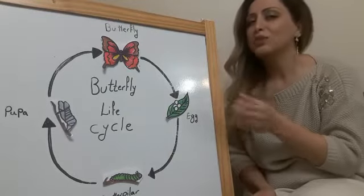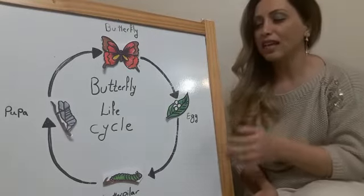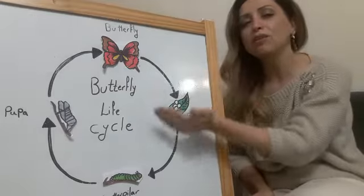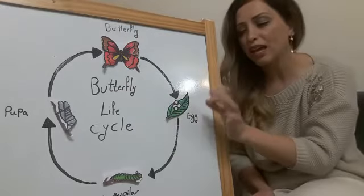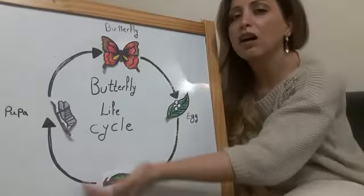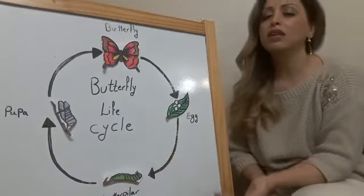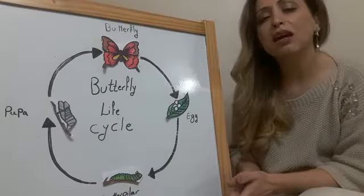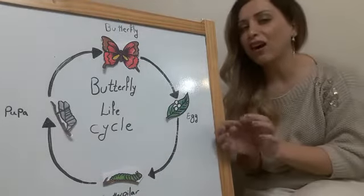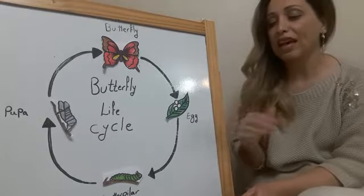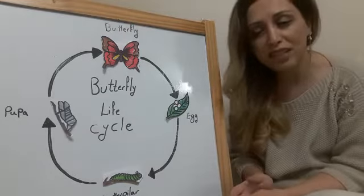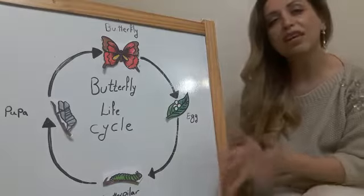The egg stage is about three to seven days. There is a developing larva inside the egg, and after seven days caterpillars come out. A caterpillar likes to eat a lot — they eat leaves — and after two to five weeks when they grow up,